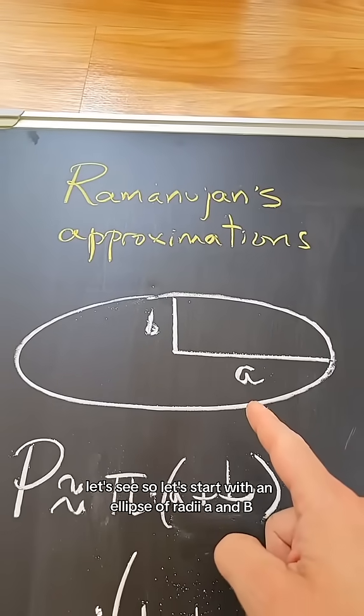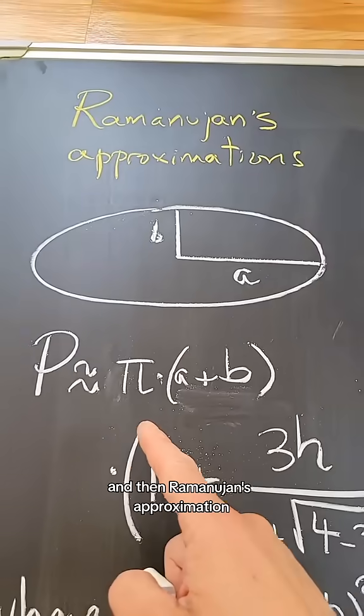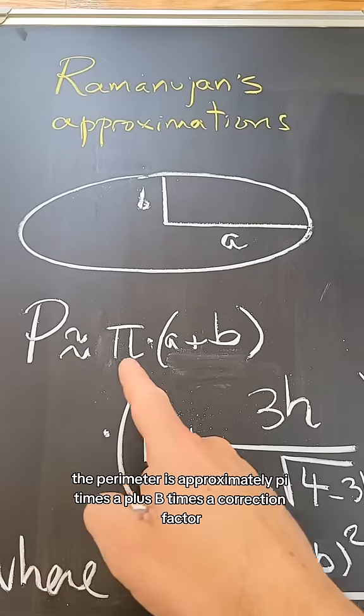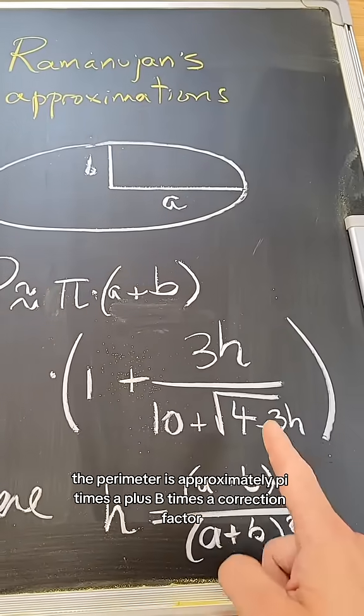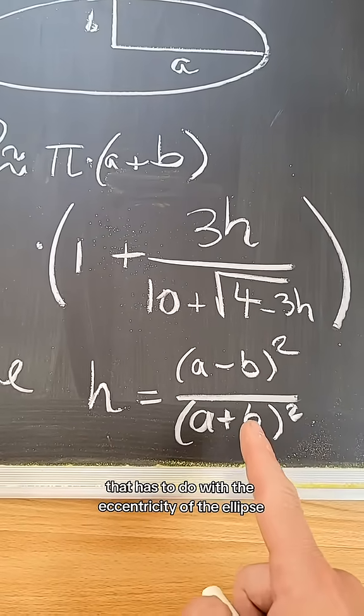Let's start with an ellipse of radii A and B. Ramanujan's approximation, or one of them, reads as follows: the perimeter is approximately π times (A + B) times a correction factor that has to do with the eccentricity of the ellipse.